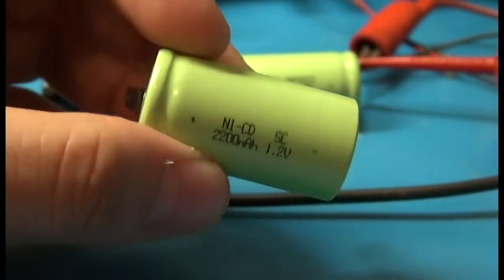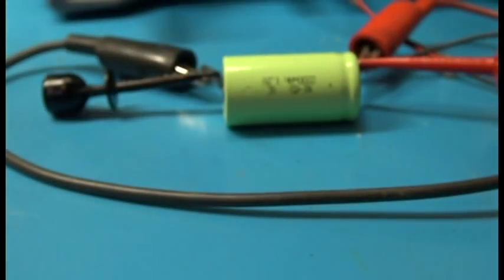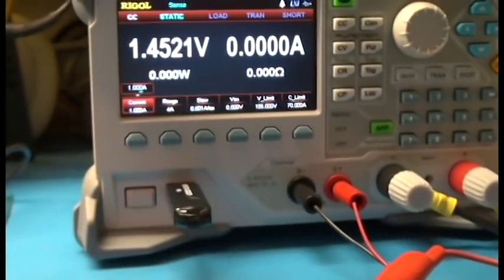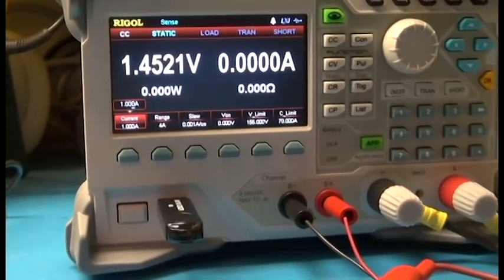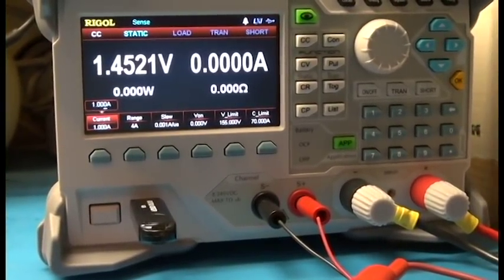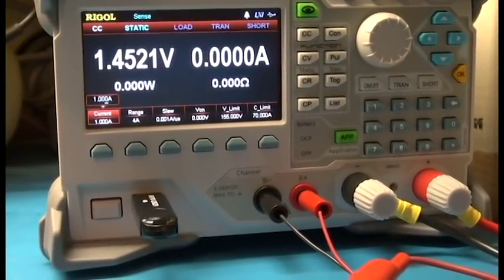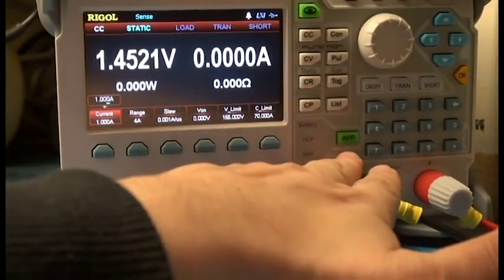They did work out okay in the meter, but I want to test the battery on my Rigol DL3021A DC load. So what we're going to do is go into battery mode.